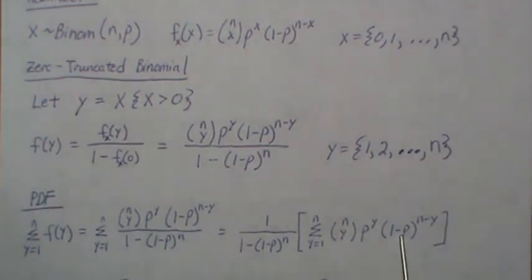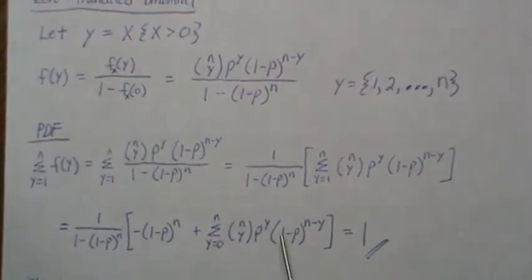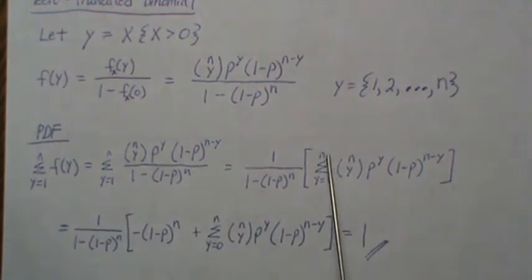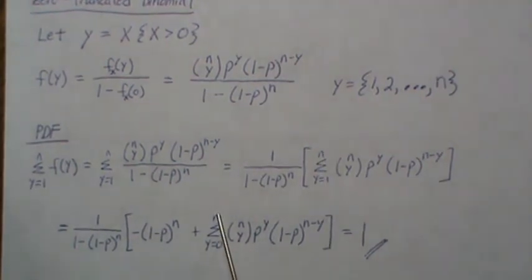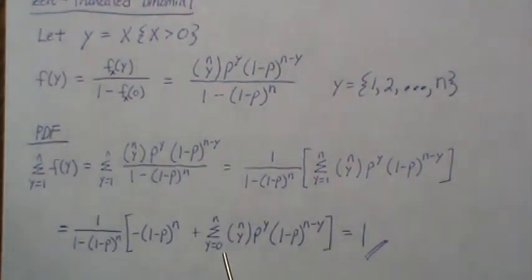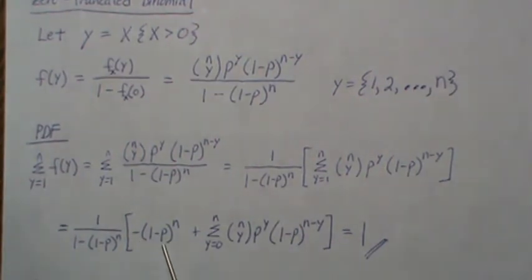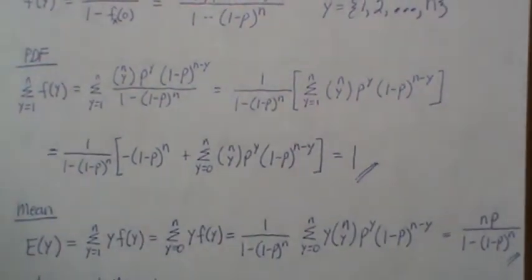Now to this we're going to add a well-chosen zero. Notice the sum goes from 1 to n, but here we go from 0 to n. We added in the zero case, so we have to subtract it back out. Since the binomial probability mass function sums to 1, we get 1 minus (1 minus p) to the n, so it does equal 1.